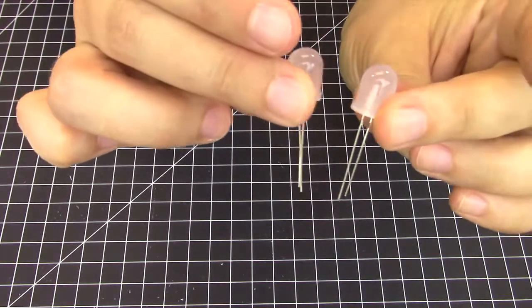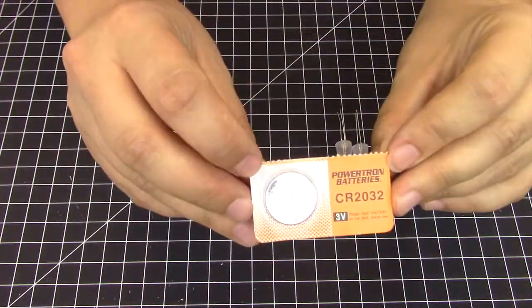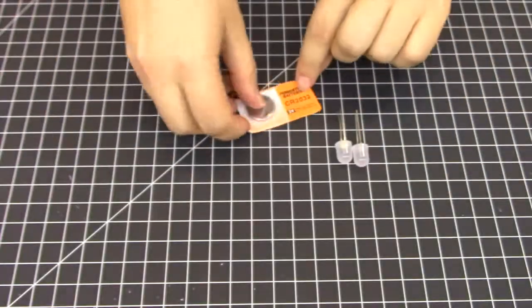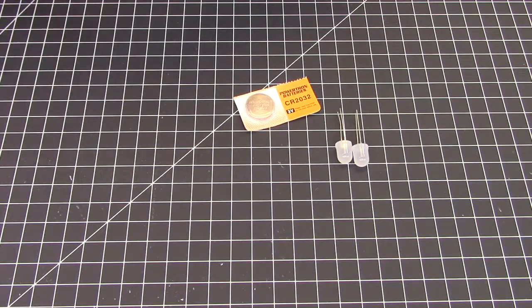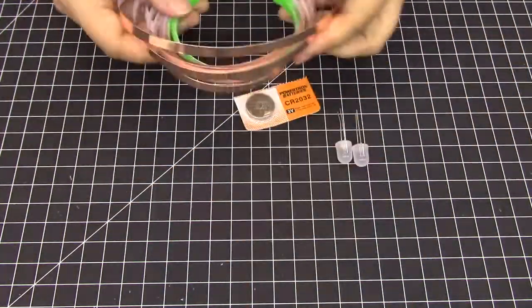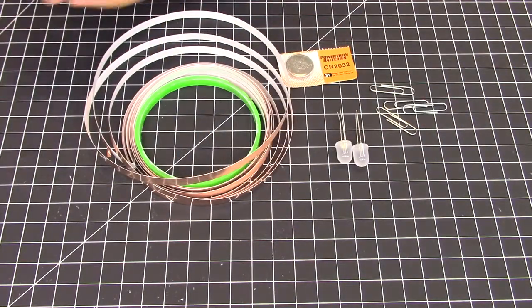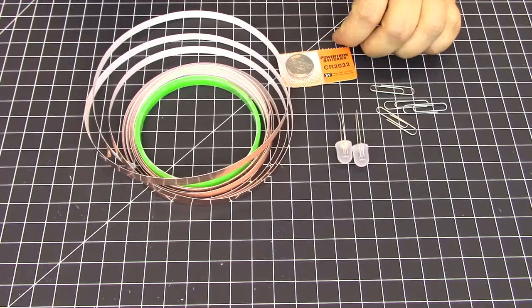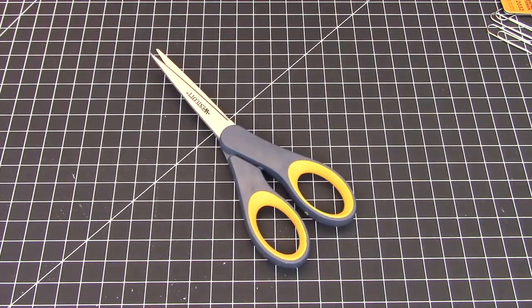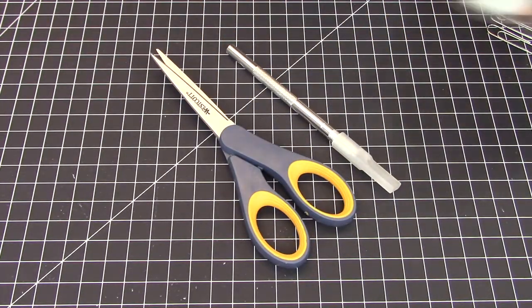You will need two LEDs, your CR2032 battery, and conductive copper tape. You will also need paper clips. You can use the regular sized or the jumbo ones. You'll need scissors, exacto knife, and tape.